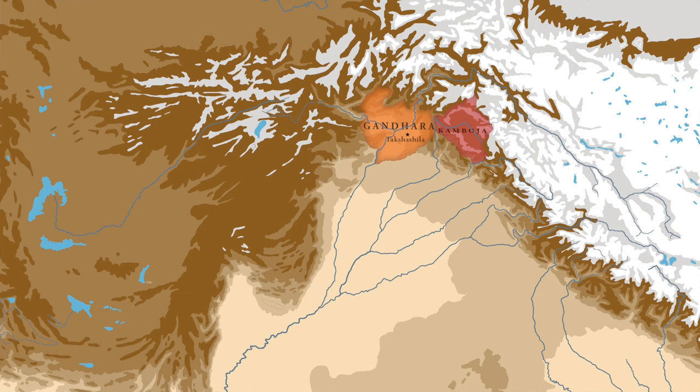But in the north, and particularly in the northwestern part of the Indian subcontinent, there was no such power like Magadha, and most of the territory in the northwest was divided between small kingdoms. The two major kingdoms in this area were Kamboj and Gandhar. All of these small kingdoms were quite wealthy and they were continuously at war with each other, which made them a tempting target for conquest.